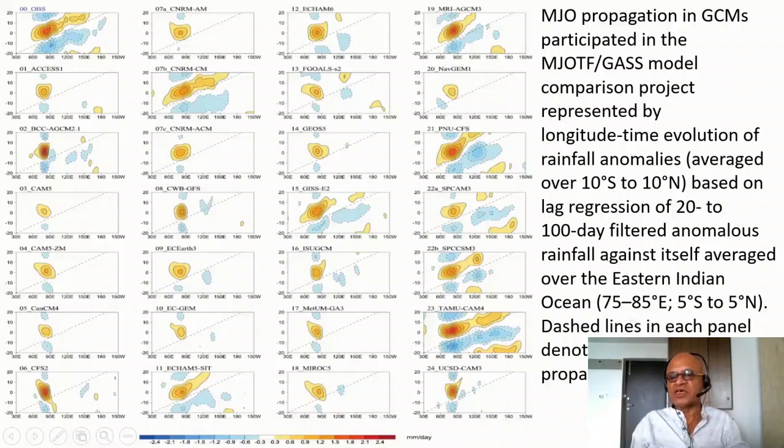That gives you a sense of propagation. Dashed line in each panel denotes the 5 meter per second eastward propagation phase speed which is the observed MJO phase speed.